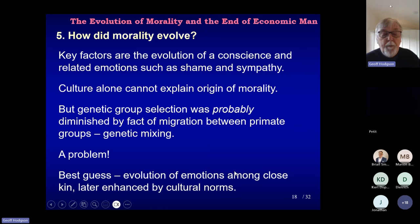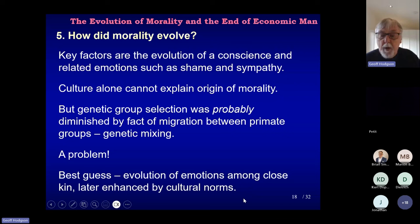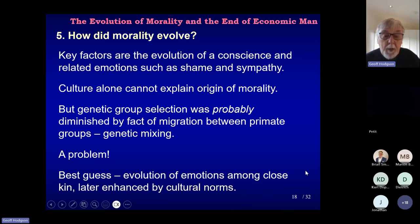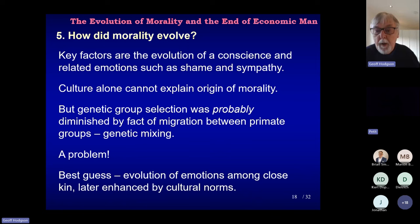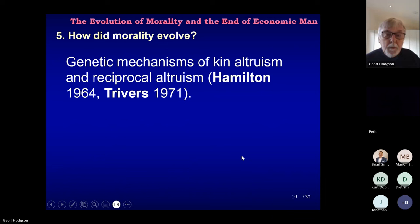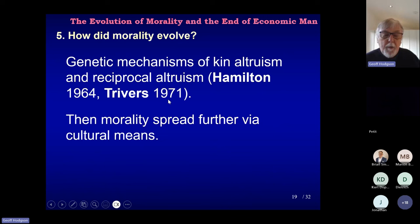The best guess, I would say, is the evolution of emotions amongst close kin, later enhanced by cultural norms. This relates to a previous talk by Samara Akosha, where he talked about these particular mechanisms. Group selection and kin selection are actually formally related, but the mechanisms can be different. Creating a critical mass of people with a proto-morality probably emerged among close kin — that would be a best guess — and then it would spread towards others. You have the genetic mechanisms of kin altruism — Hamilton, Trivers — and then morality spread further by cultural means.